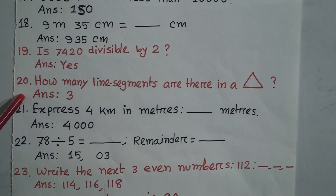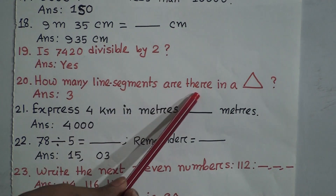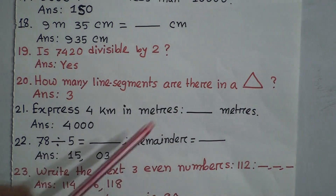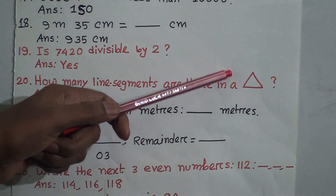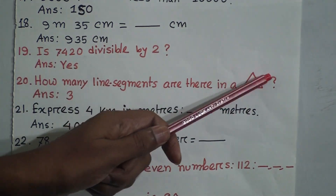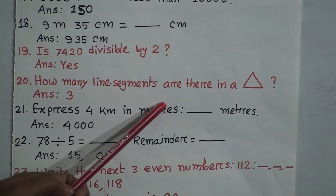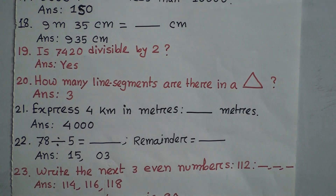Question 20: How many line segments are there in a triangle? A triangle has 3 sides — 1, 2, and 3 — meaning there are 3 line segments in a triangle.